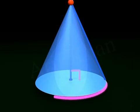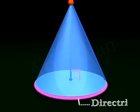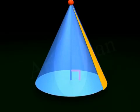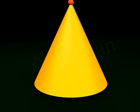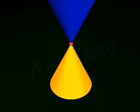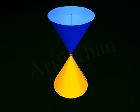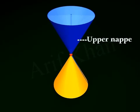The perimeter of the base is called the directrix. The lateral surface of a right circular cone is called a nap. A double right circular cone has two naps. The nap above the vertex is called the upper nap, and that below the vertex is called the lower nap.